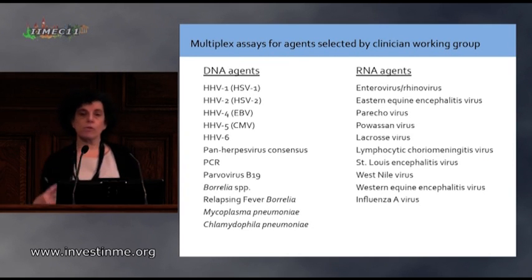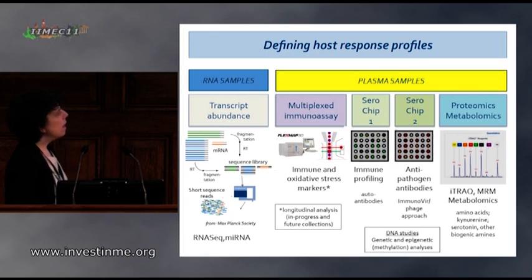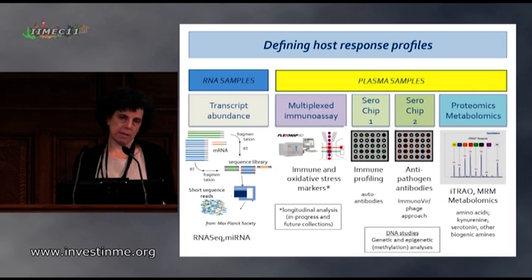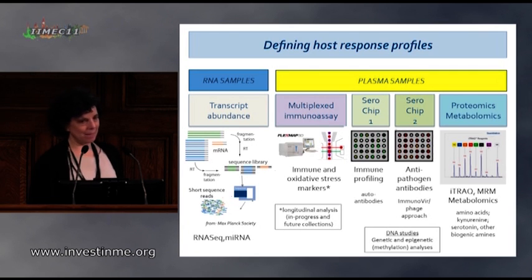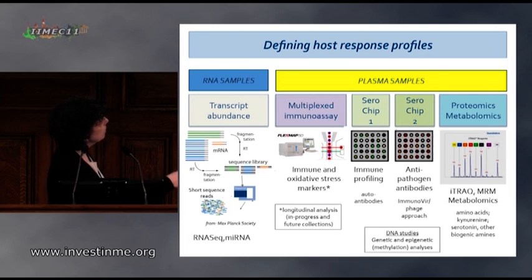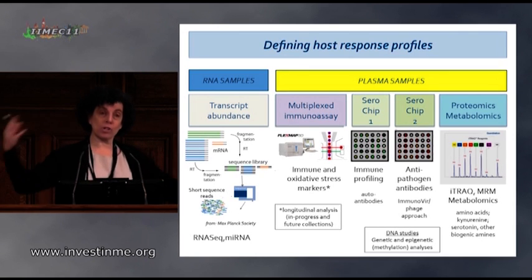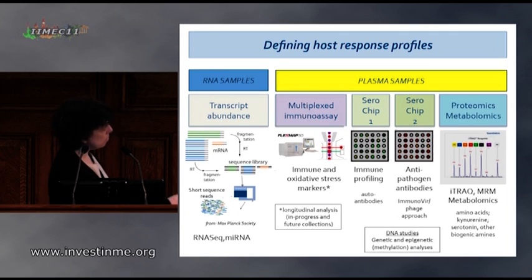We looked at agents first through MASTAG PCR, and now we're looking further. We use techniques at the RNA level, DNA level, genetic and epigenetic, as well as plasma and protein levels — doing immune oxidative stress markers, immune profiling for autoantibodies, and pathogen antibody detection through a new phage approach that tells us what antibodies are present, indicating over time what infectious agents people have seen, and then also proteomics and metabolomics.